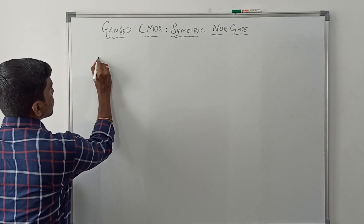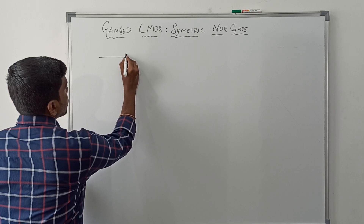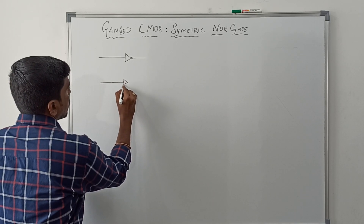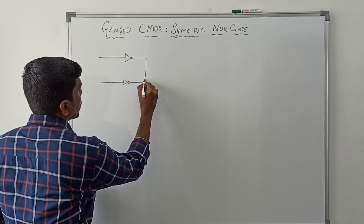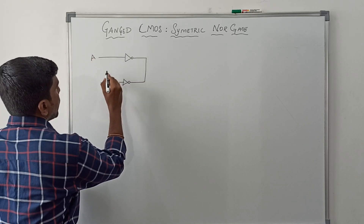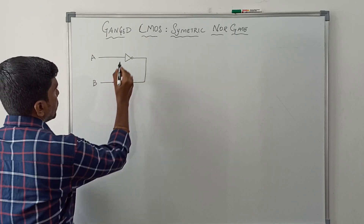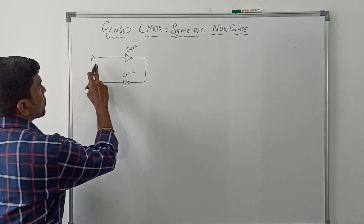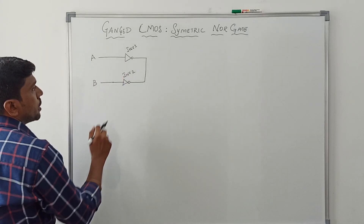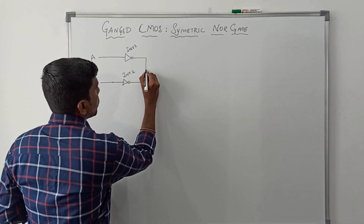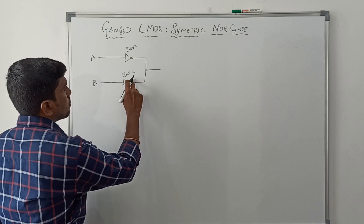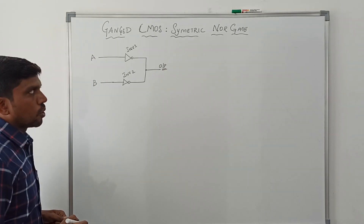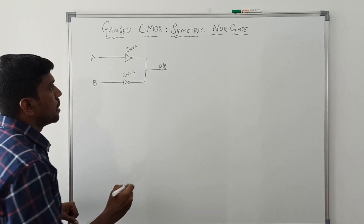In this ganged CMOS, it consists of many number of inverters. In this structure I have two inverters. The input of the first inverter is A, and the second inverter input is B. This is inverter one and this is inverter two. From the shorter paths of these two inverters we can get the output. This is the simple structure of ganged CMOS.